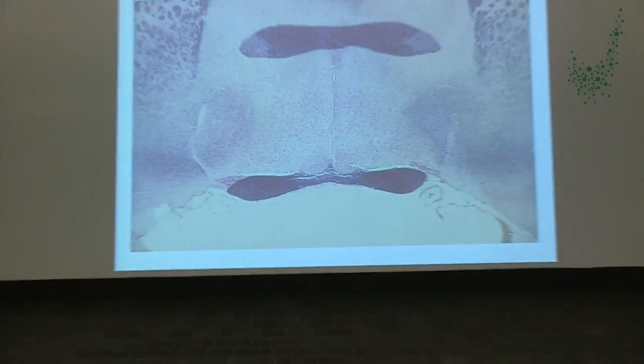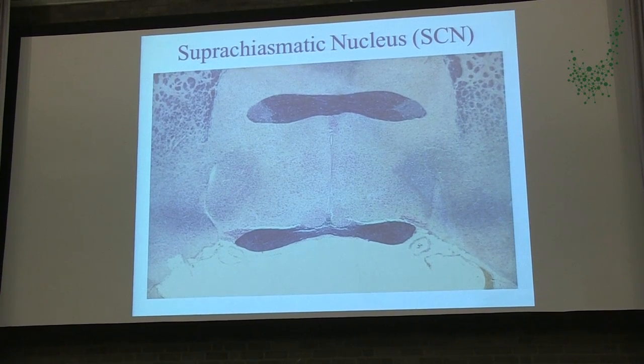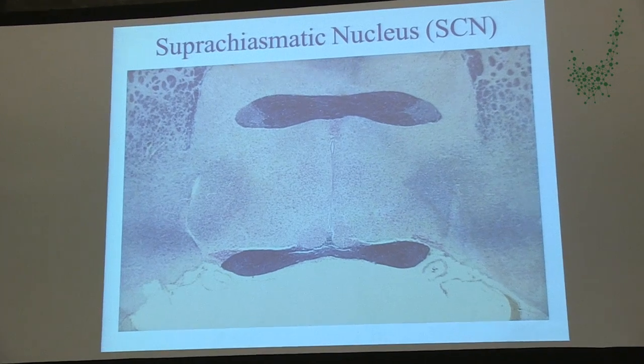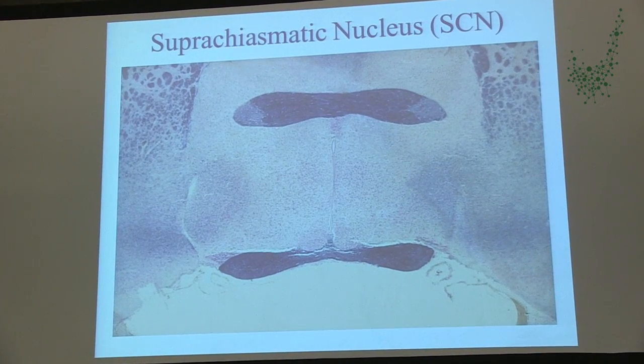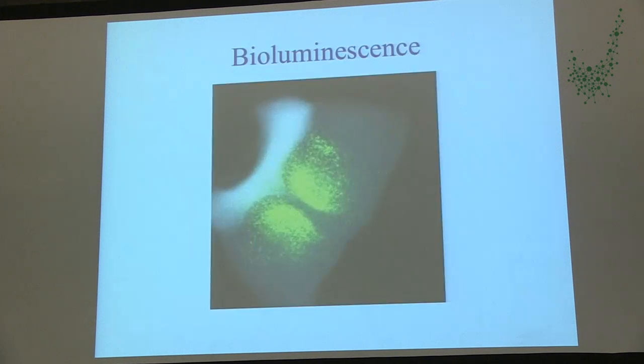These cells have the genetic capacity to produce rhythms, and we can visualize that. We can connect the genes of the clock to a substance that fireflies produce — luciferase — which is luminescent. By connecting the clock genes to this illuminating substance, we can actually view the activity of the genes. Here I show you one of our recordings, going over a few days.